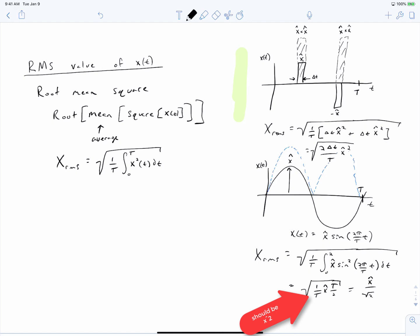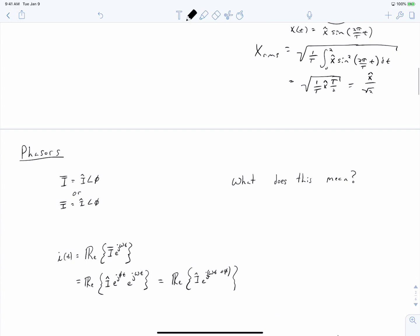we end up getting a familiar result, x hat over the square root of 2. You can go from the peak of a sinusoid to its RMS value by dividing the peak by square root of 2, or going from the RMS value to the peak of a sinusoid by multiplying by the square root of 2. Notice that I am emphasizing the word sinusoid. That relationship only applies to a pure sinusoid.